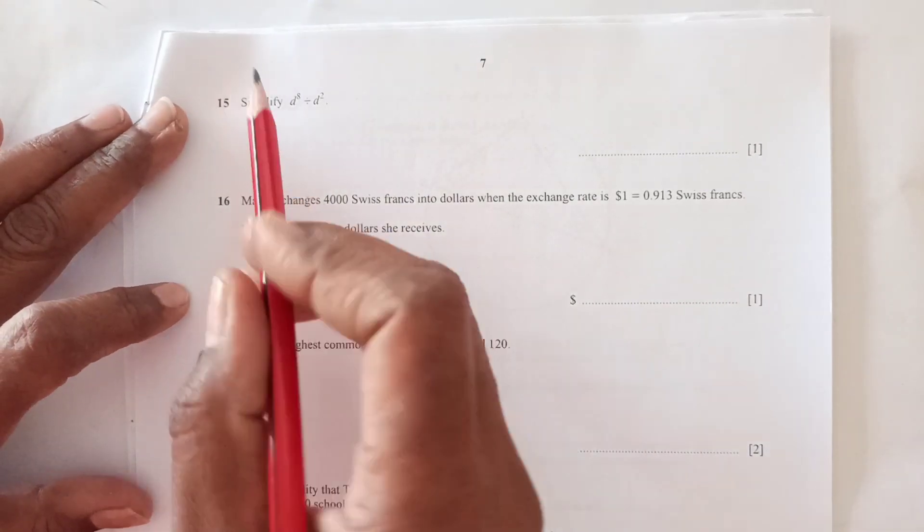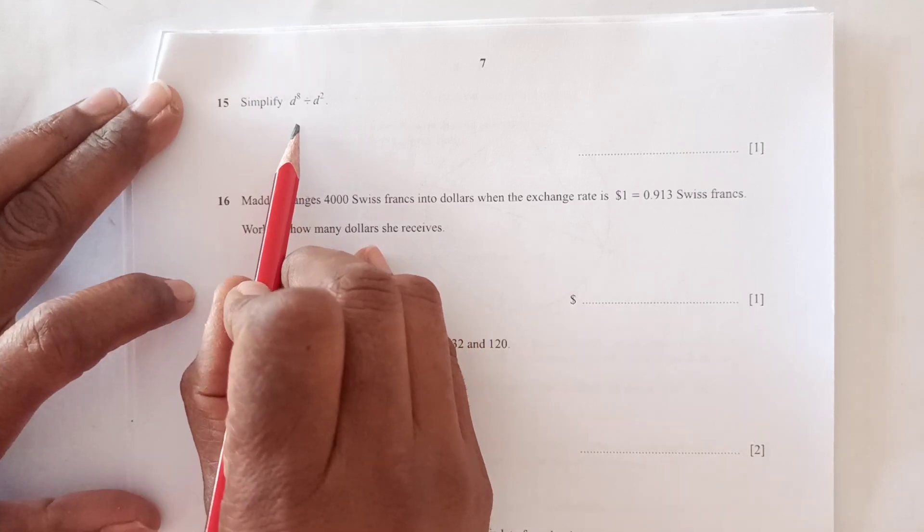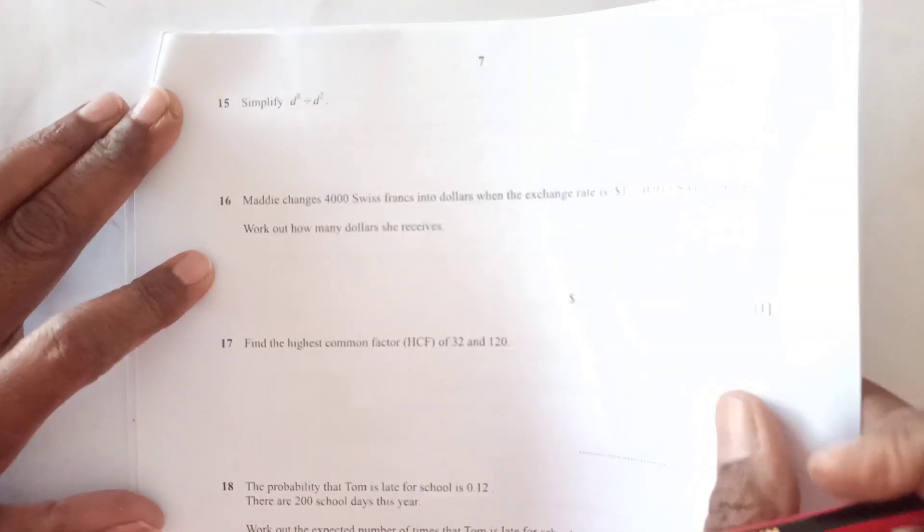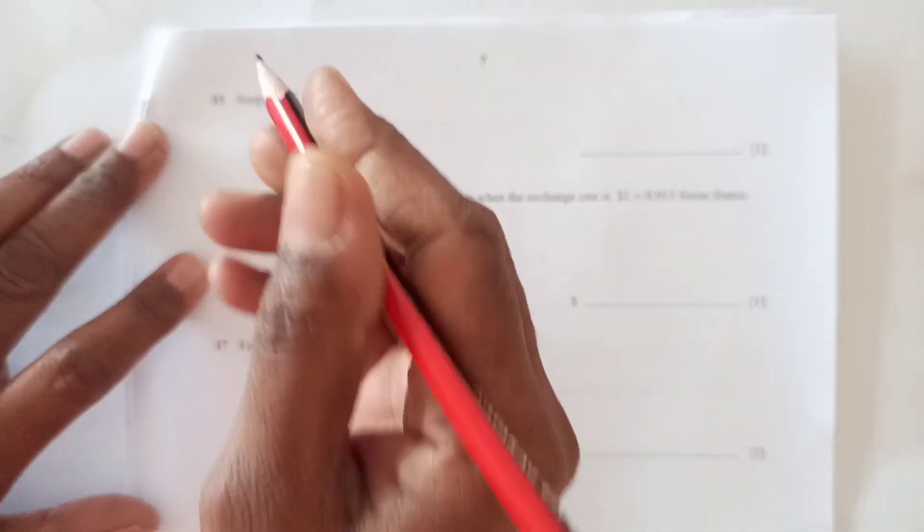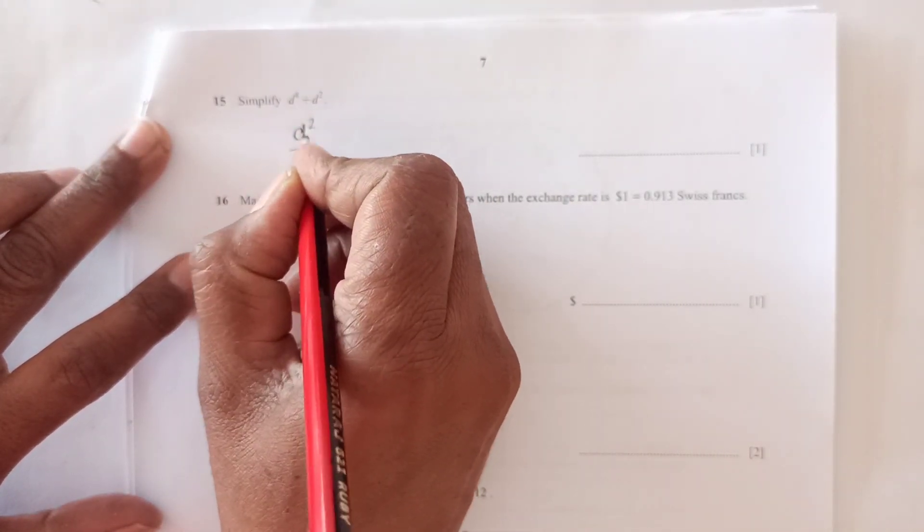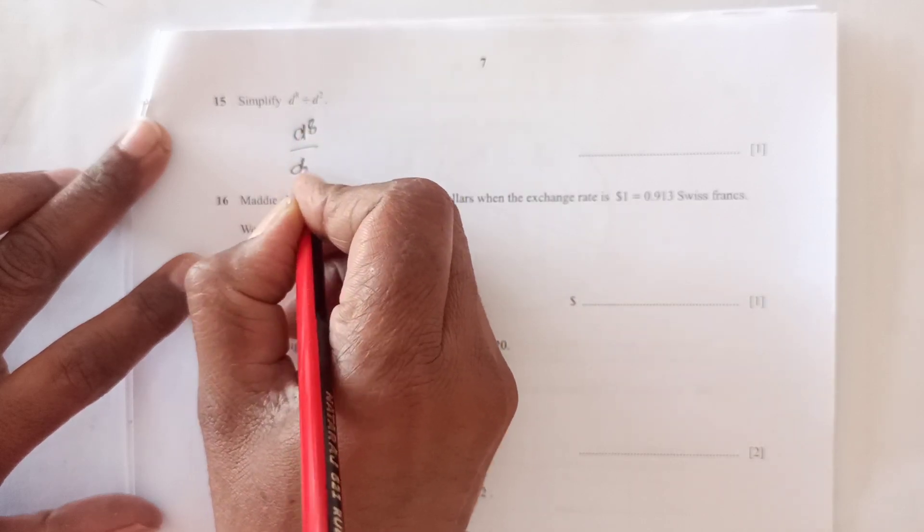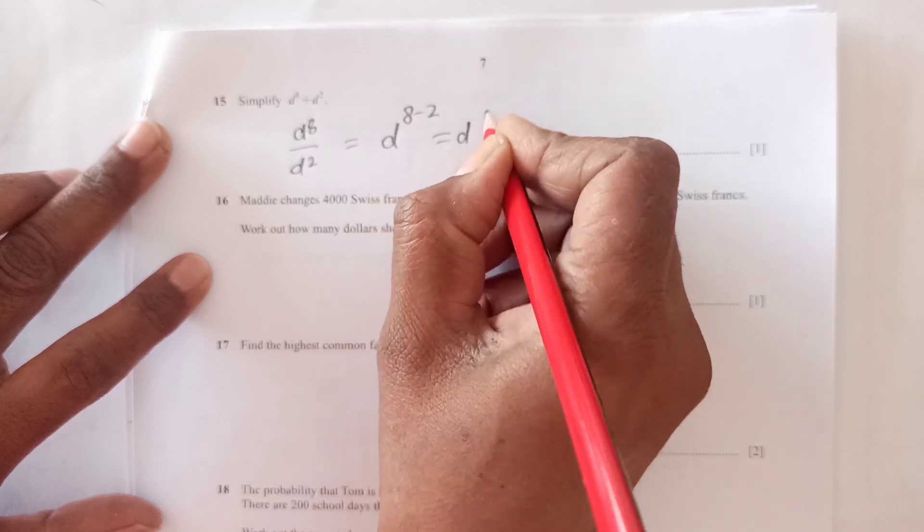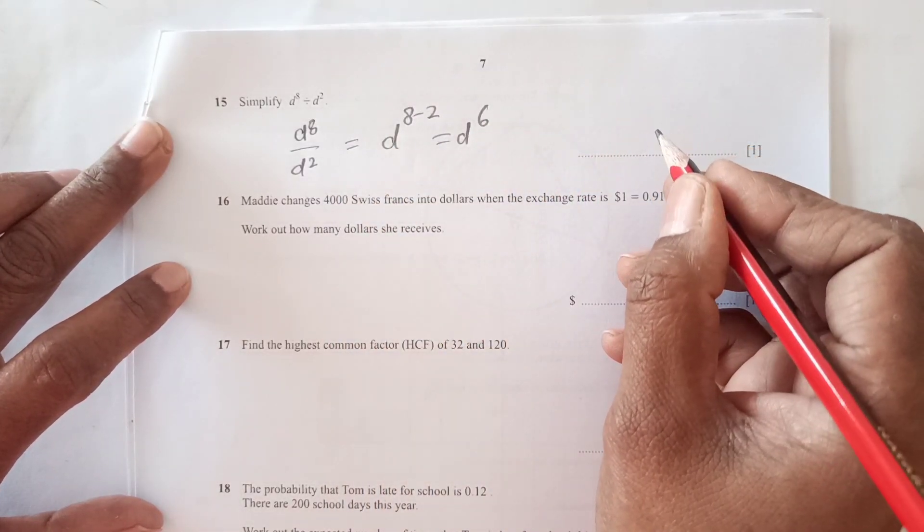Question number 15: Simplify d to the power 8 divided by d to the power 2. Since the exponents are dividing, we will subtract them. So d to the power 6 is the final answer.